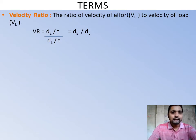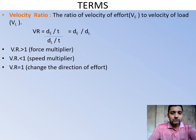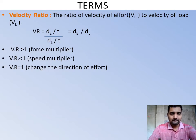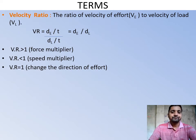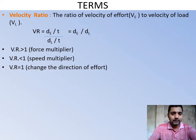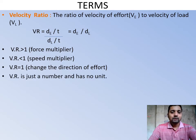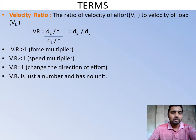After cancelling t, we get VR = d_E / d_L. This ratio can also be used to know if a machine is a speed multiplier, force multiplier, or used to change direction. If VR is greater than 1, it is a force multiplier; if less than 1, it is a speed multiplier; if equal to 1, it changes direction. Due to energy wastage, MA may not equal VR — VR is always greater than or equal to MA for an actual machine, but MA equals VR only for an ideal machine. VR, like MA, is just a number with no unit.